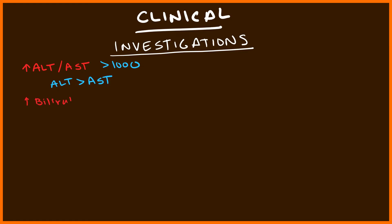You will also see an increase in bilirubin, but it typically does not go above 10. ALP similarly will typically not go above 400, so although elevated, it's not going to be as elevated as your ALT and AST. Inflammatory markers will be high — understandable given the involvement of the cytotoxic CD8 T cells causing necrosis — so you'll get an elevated ESR, CRP, and other inflammatory markers.